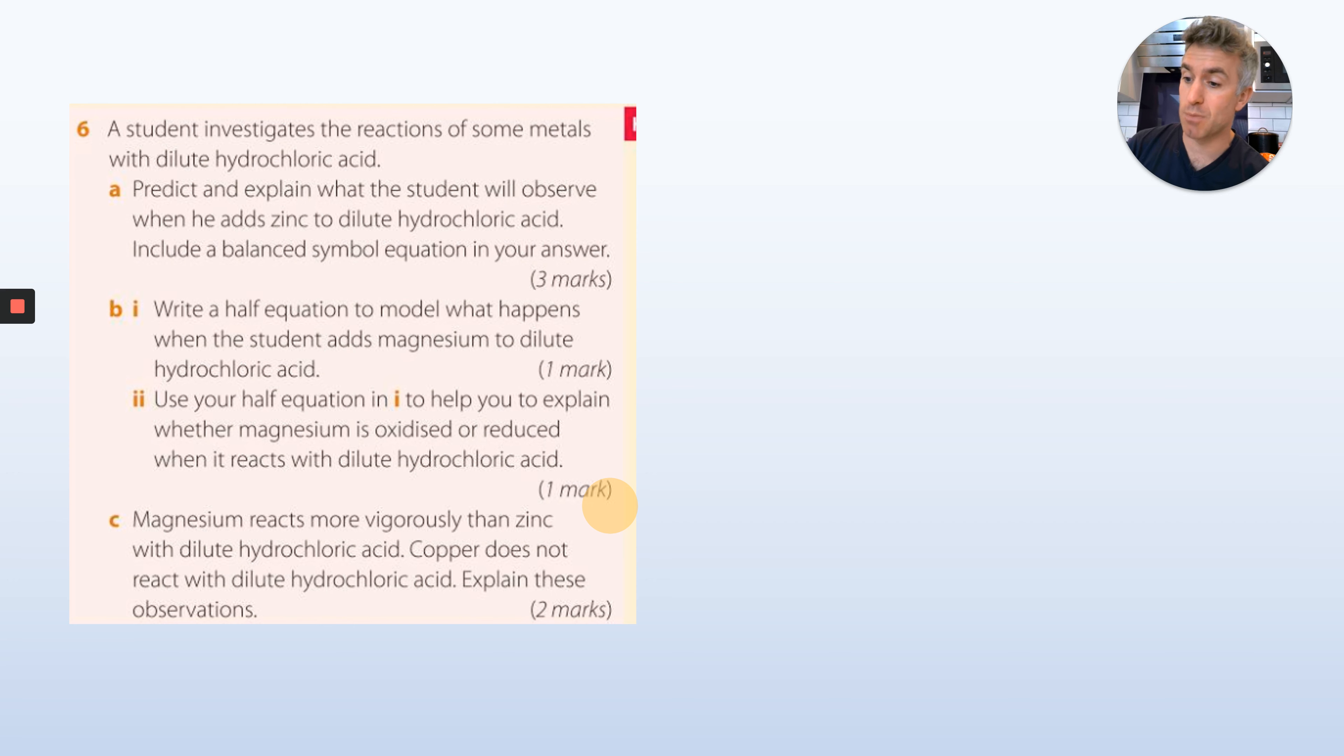Use your half equation to explain whether magnesium is oxidized or reduced. Remember OILRIG. When magnesium reacts more vigorously with zinc than with dilute hydrochloric acid, copper does not react with dilute hydrochloric acid. Explain these observations. That's about the reactivity series and where they are.